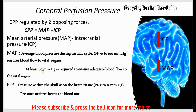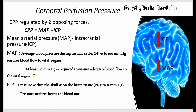If MAP falls below 60, blood flow to the vital organs is affected. So this normal MAP ensures and maintains blood flow to all vital organs, including the brain.